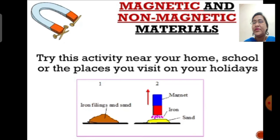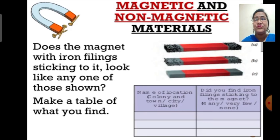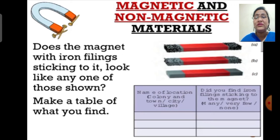One more activity we will do. Try the activity that we have just learnt near your home or at places you visit on your holidays. If we try to attract the iron fillings in the soil using a magnet, note down your readings in your notebook in the table shown here — write the name of the location you tested, and in the next column write your observation of the magnet with iron fillings stuck to it: whether many, very few, or none were attracted. This will tell you how much iron is in the soil at that area.